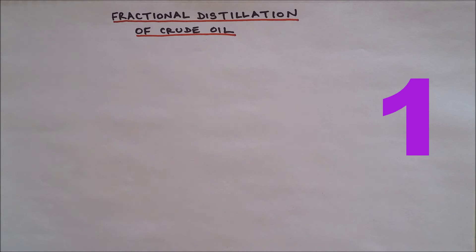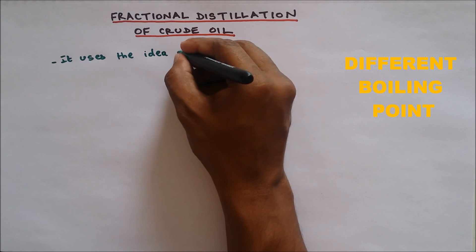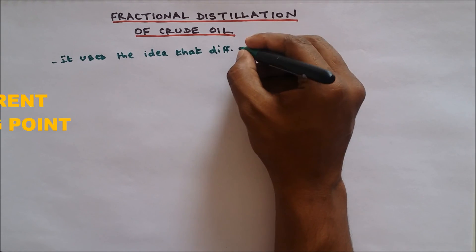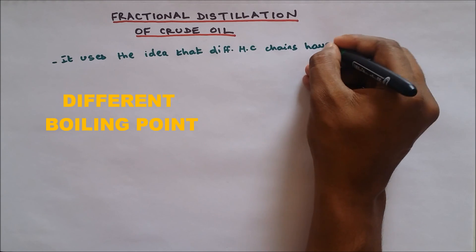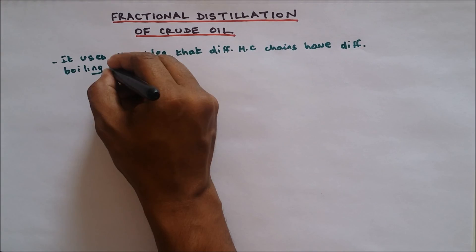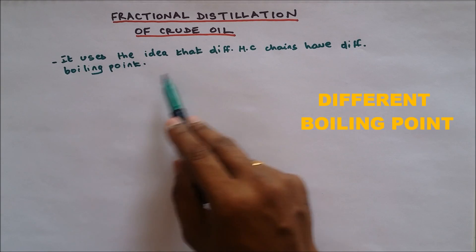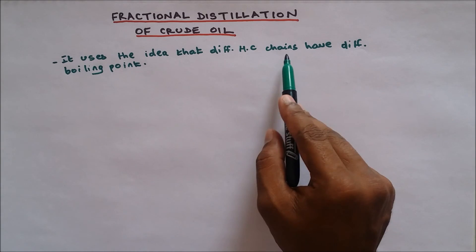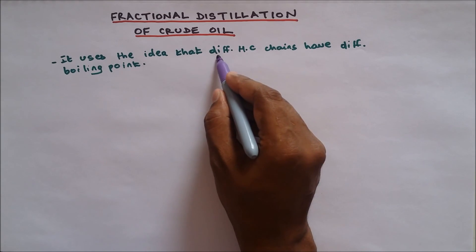Number one: based on what concept does fractional distillation work? It uses the idea that different hydrocarbon chains have different boiling points. So different length of hydrocarbon chains and different boiling points.